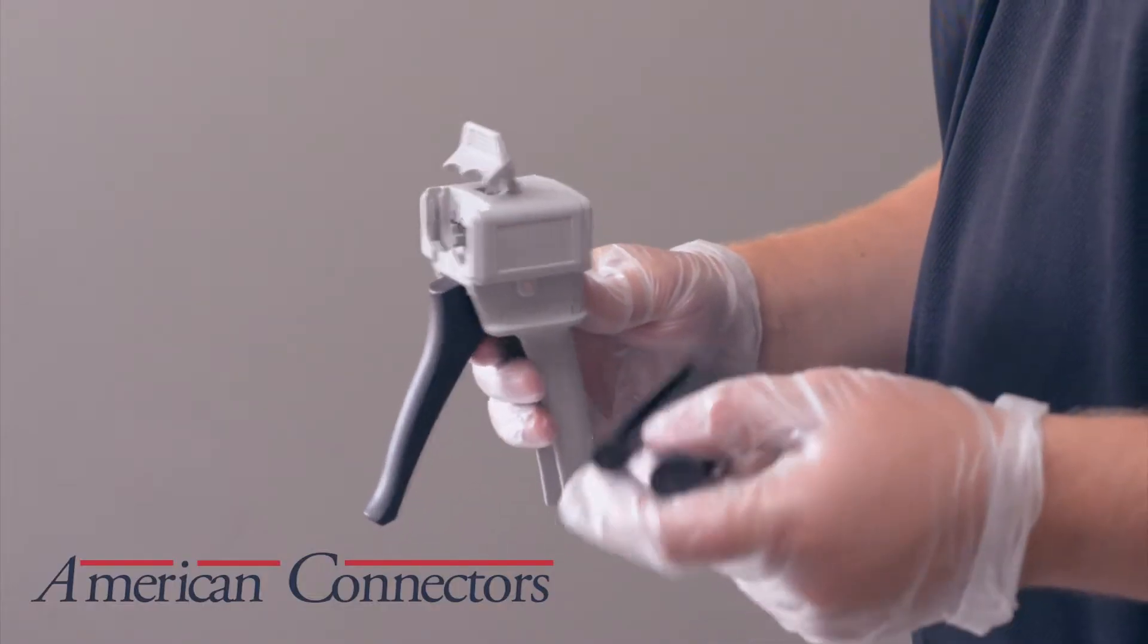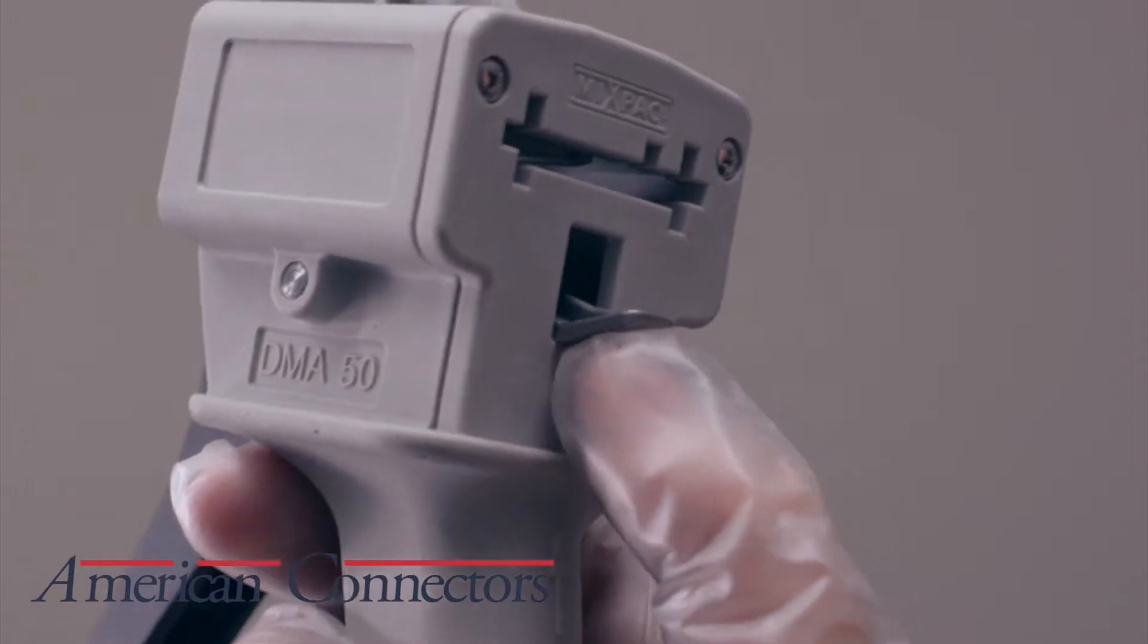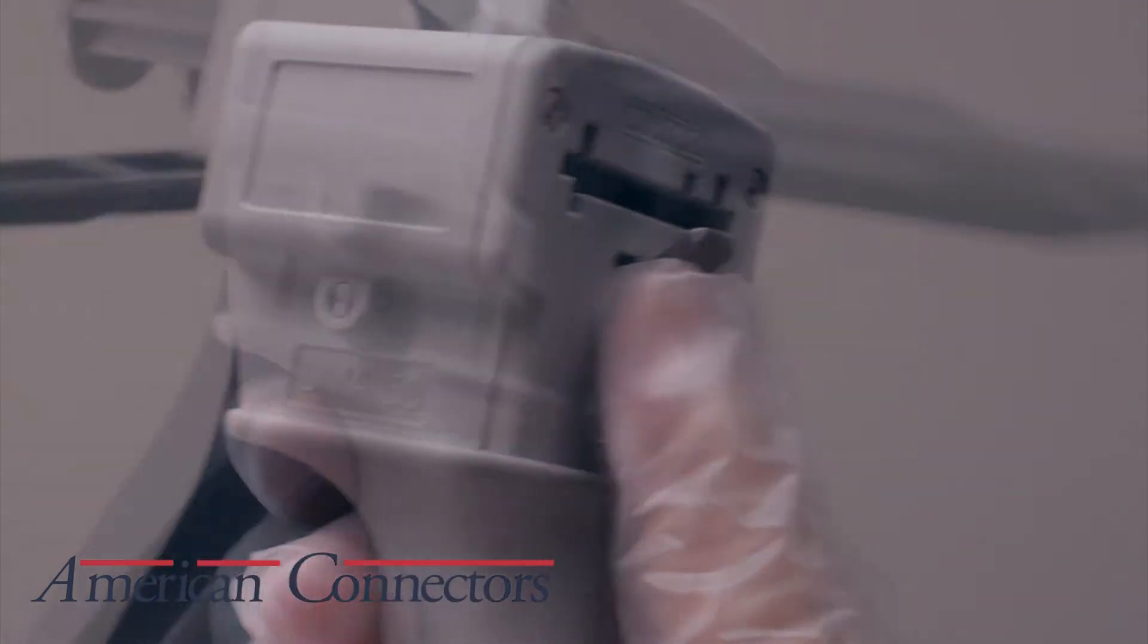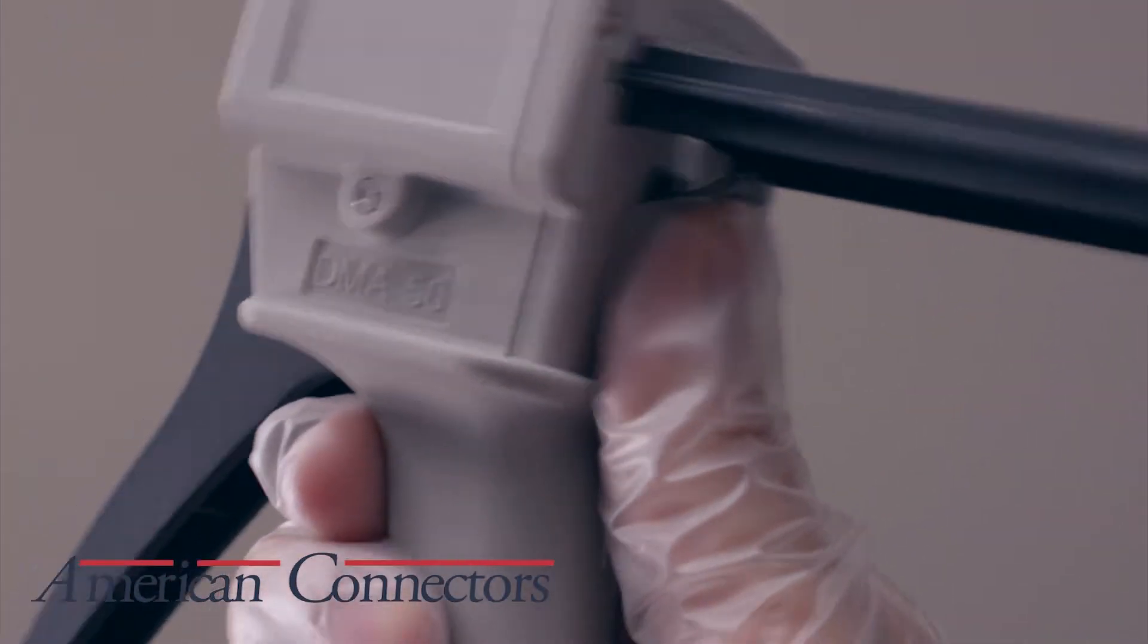To assemble the gun, line up the plunger in the front and push up on the lever in the back. Slide the plunger all the way through.